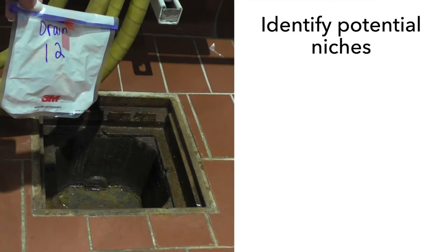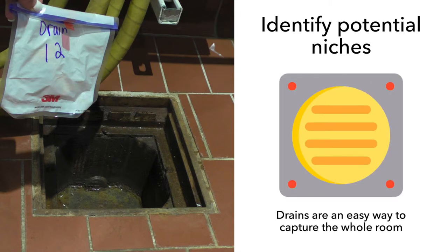For example, drains are an easy way to capture the worst-case scenario of the whole room, as water that has touched equipment and floors flows into drains. If Listeria are present in a room, they will likely end up in the drain. Remember that finding Listeria in a drain can result in cross-contamination of food. Many facilities have practices that allow transfer of bacteria from drains onto food contact surfaces and food.